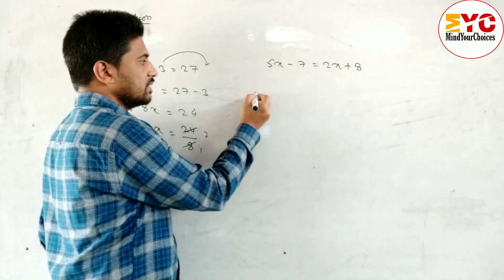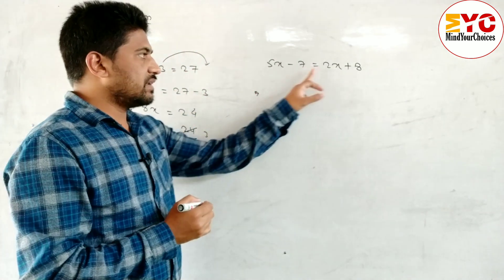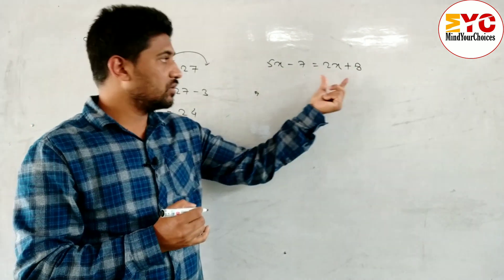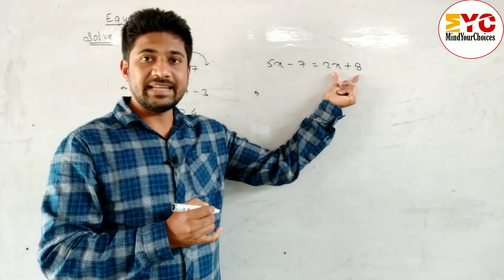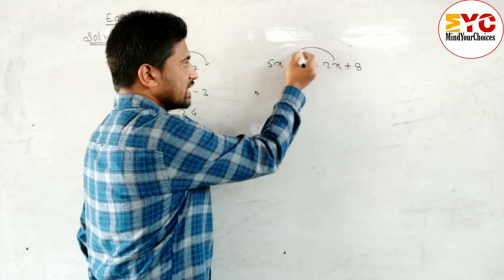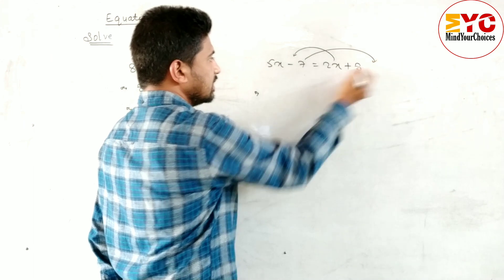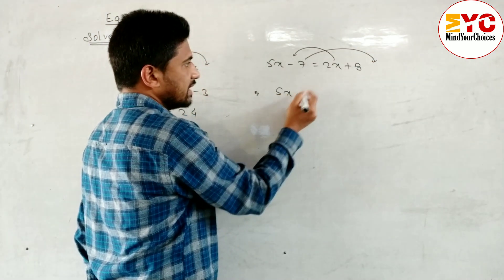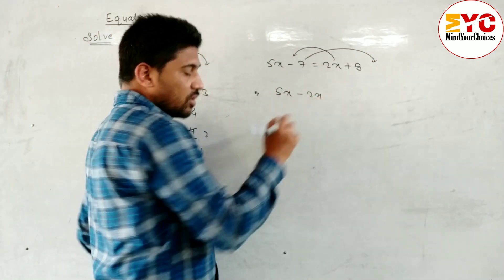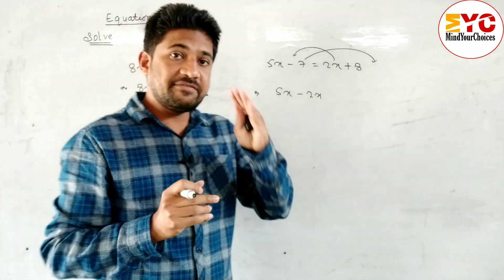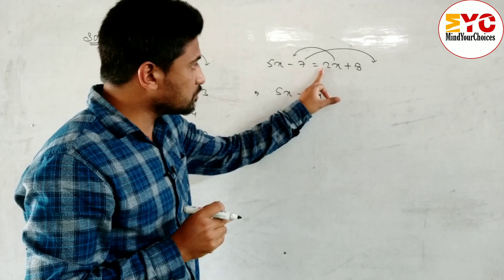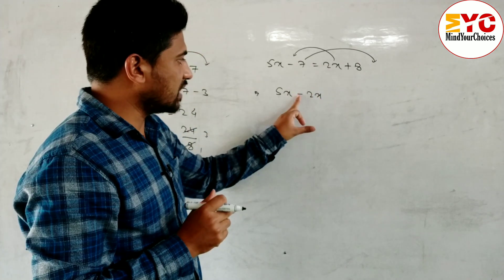Look at this one: 5x minus 7 is equal to 2x plus 8. These two are unlike terms, and here also we have unlike terms. So first of all we have to arrange like terms. It means 2x we have to take to the left and 7 at the last. We can write 5x minus 2x. Here is plus 2x so we have to write minus 2x — always we have to change the sign. If plus we have to write minus, if minus we have to write plus. You can see here it is positive so we have to write negative.